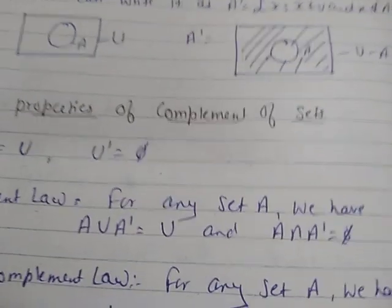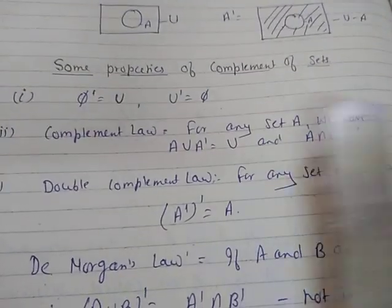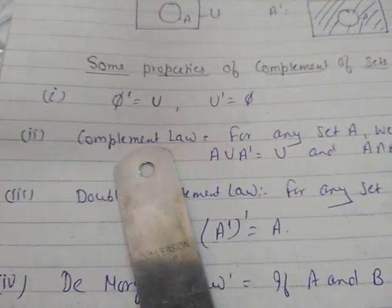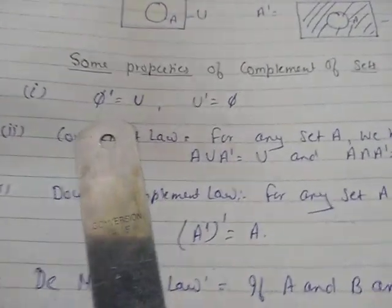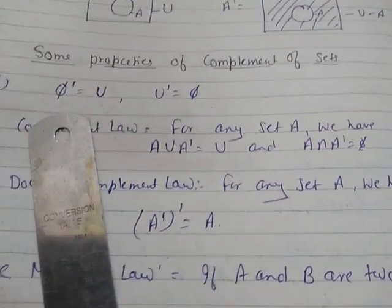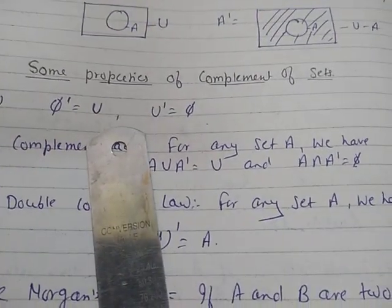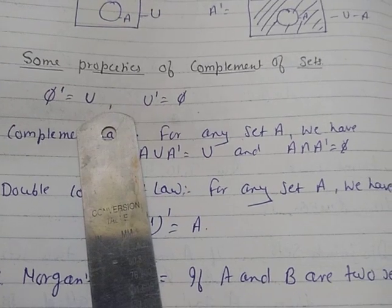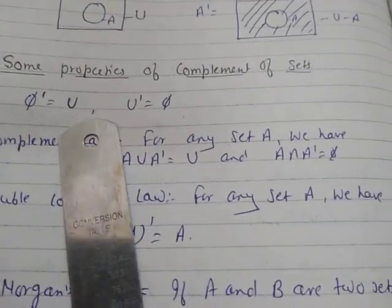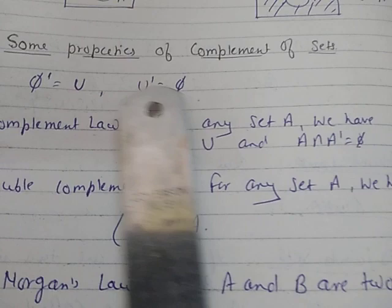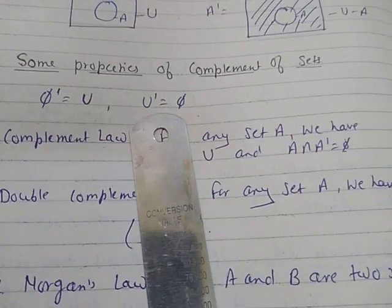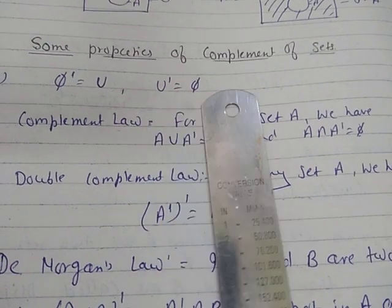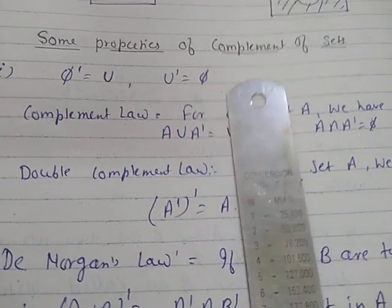Now we learn some properties of complement of sets. First property: phi complement equals U — because phi means nothing, so phi plus phi complement equals U, therefore phi complement equals U. And U complement: U plus U complement equals phi, therefore U complement equals phi.